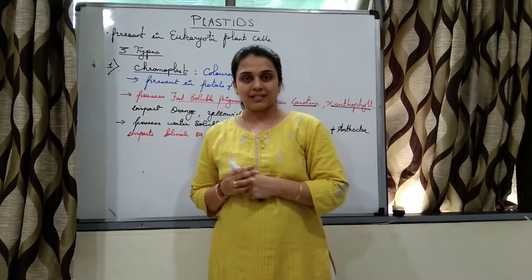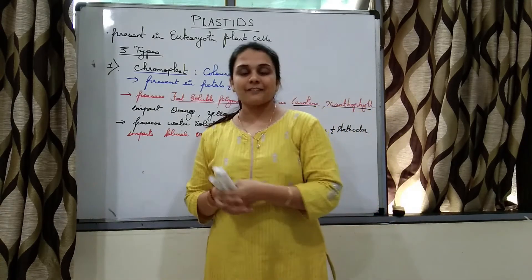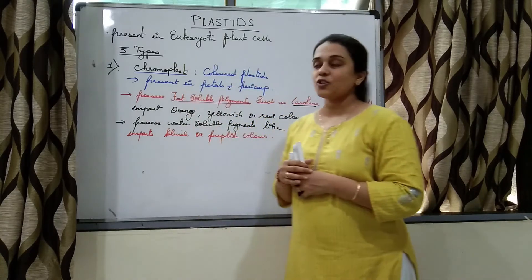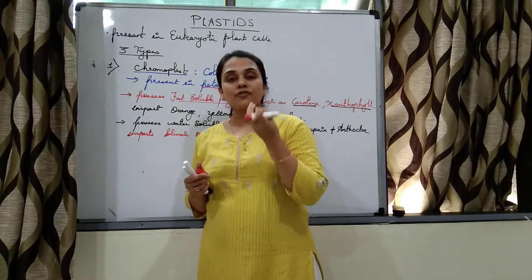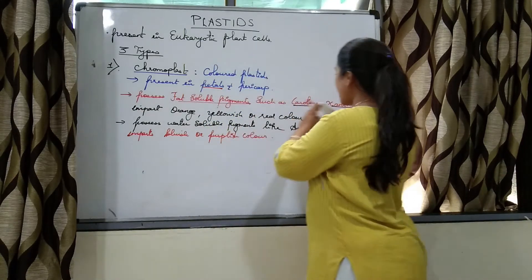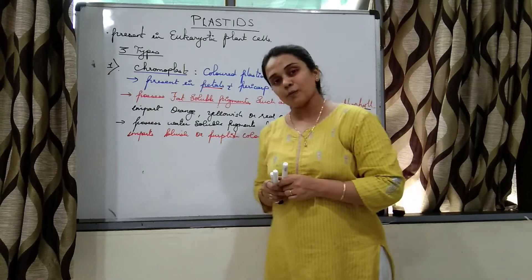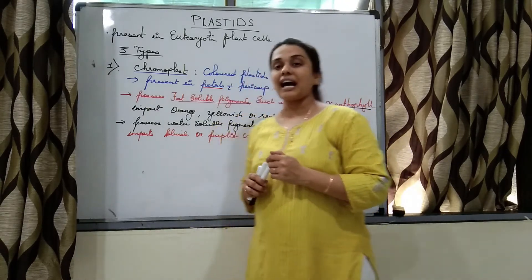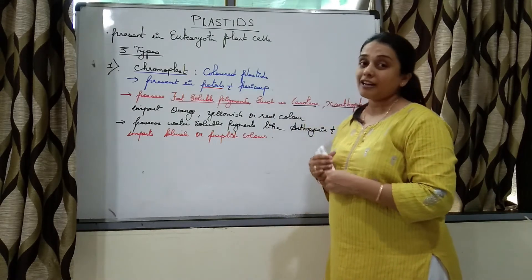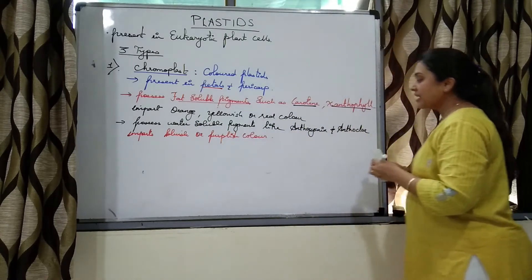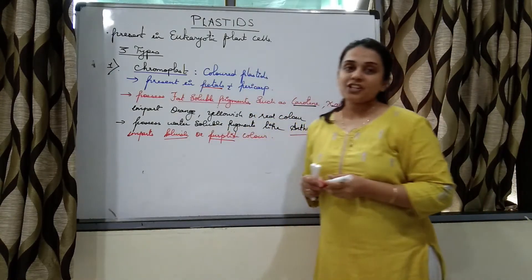To summarize: chromoplast is a colorful plastid. It possesses specific pigments that give it color. It is present in petals and pericarp. The pigments can be fat-soluble — carotene and xanthophyll, giving orange, yellowish, or reddish color — or water-soluble — anthocyanin and anthochlore, giving bluish or purplish color.